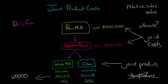We don't have to do it using relative sales value — that's just one way. We could also allocate based on the number of gallons of raw milk used in each process, or we could look at something like net realizable value (NRV). I'll make a video on each one of these methods so we can explore them in more detail.